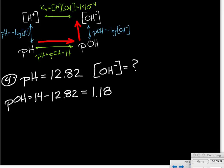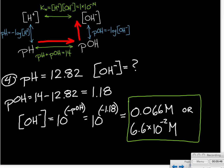And then to find the hydroxide ion concentration, we have to take 10 raised to the power of the negative pOH. And when we substitute in our pOH of 1.18 and change its sign, we'll calculate that the concentration of the hydroxide ion is 0.066 molar, or 6.6 times 10 to the minus 2 molar.